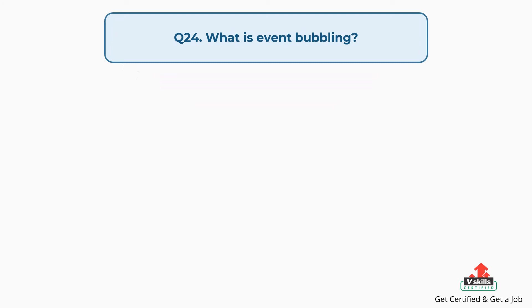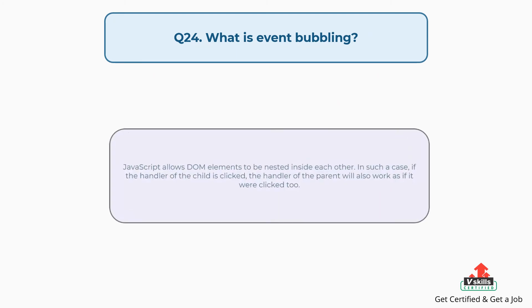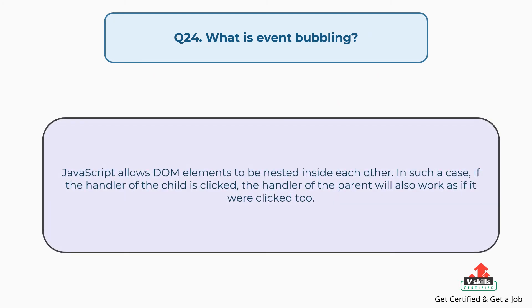Question number twenty-four: what is event bubbling? JavaScript allows DOM elements to be nested inside each other. In such a case, if the handler of the child has clicked, the handler of the parent will also work as if it were clicked too.